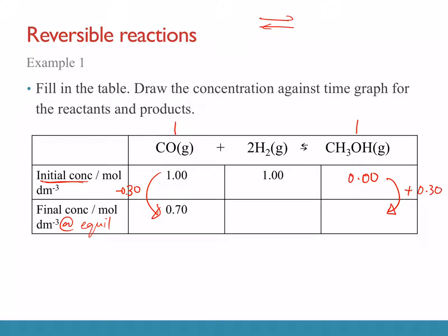Because on the reactant side there's a decrease of 0.3, at the products side there must be an opposite sign — it must have gained 0.30 mol/dm³ as well. Next, looking at the CO to H₂ ratio of 1:2 — they are on the same side of the equation. If there's a decrease in CO, there should also be a corresponding decrease in H₂ gas as they are both being used up to form CH₃OH. So if CO decreases by 0.3 and the ratio is 1:2, H₂ should decrease by 0.60, giving 1 minus 0.6 = 0.40.